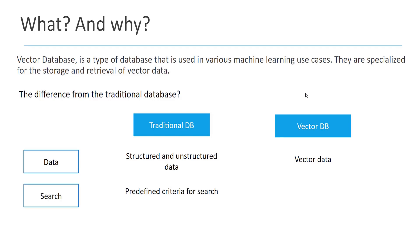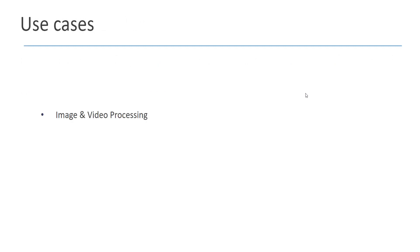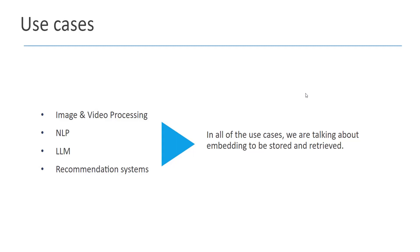In terms of search, in the traditional database you have a predefined criteria for searching — for example, based on a specific field. Let's say if the credit card amount is more than ten thousand dollars you are going to filter your data. While in a vector database you search and find your data based on the similarity between the vectors or the context. The use cases of vector databases are in machine learning and AI — for example, image and video processing, natural language processing, large language models, and recommendation systems. In all of these use cases we are talking about embedding data that needs to be stored and retrieved.